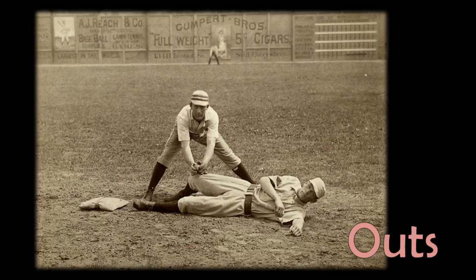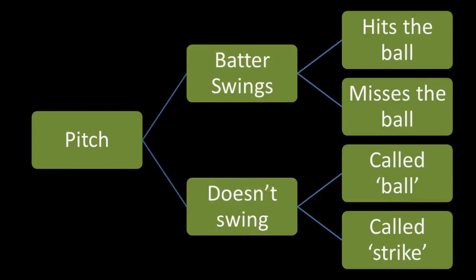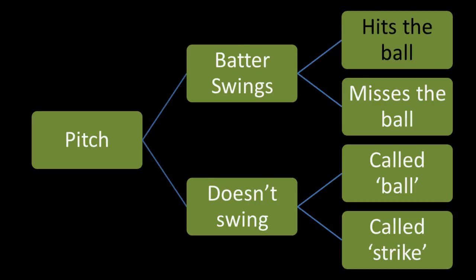We already talked about a few in the balls and strikes video, so if you've seen that video, you're already ahead of the game. From that video, you'll recall this flow chart. When the pitcher makes the pitch, a few different things can happen. If the batter does not swing, the umpire is going to call a ball or a strike. But if the batter does hit the ball into fair territory, a lot of different things can happen, a few of which will result in outs.